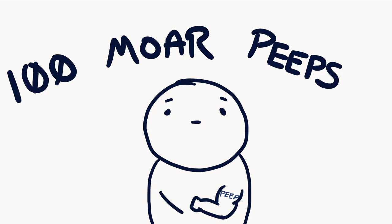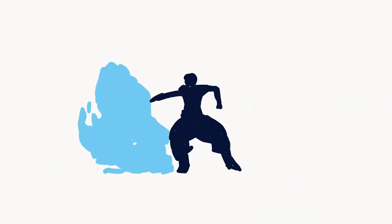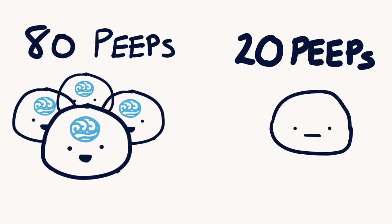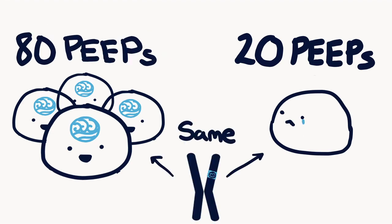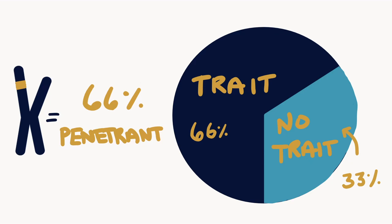Now let's say with another 100 people, they all have the same gene variant that gives waterbending powers, but only 80 of the 100 actually have the ability to waterbend, even though they all have the same gene variant. This is incomplete penetrance, where not everyone is affected by the gene variant — not everyone can waterbend — even though they all carry it.